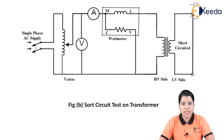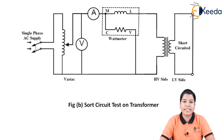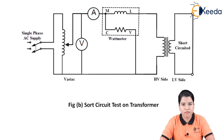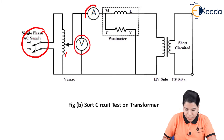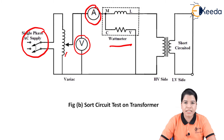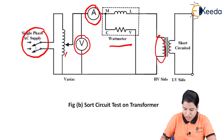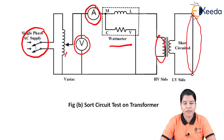Now let us study the short circuit test. The short circuit test is done to determine the copper losses as well as equivalent parameters of the equivalent circuit. In this test, the supply is given to the HV winding, whereas the LV winding is short circuited using a thick copper wire. The circuit includes a variac, a voltmeter, an ammeter, and a wattmeter with terminals M, L, C, V connected to the HV winding.